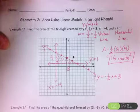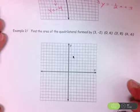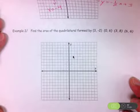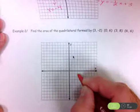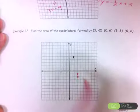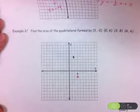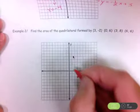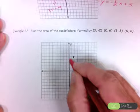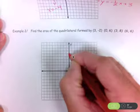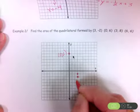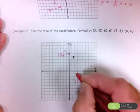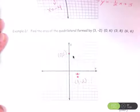For example number two, I want to plot points to form a quadrilateral rather than using linear models. The first point is at three, negative two. The next point is at zero, six.